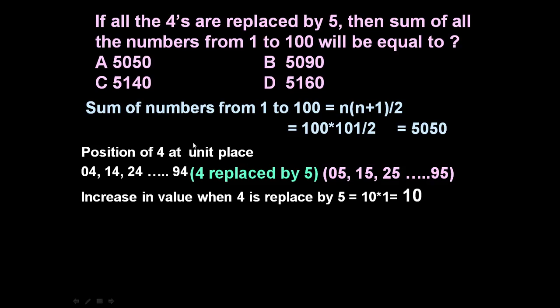At unit place, because we are talking at the unit place these are the 2 digit number. So due to change of value from 4 to 5 at unit place, the sum will increase by 10 units.